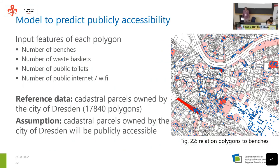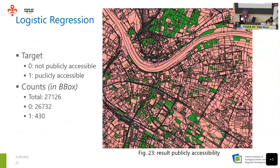For predicting public accessibility, I used a simple model counting POIs within polygons — benches, wastebaskets, public toilets, and internet access — using point-in-polygon analysis. As reference data I used the cadastral parcels owned by the city of Dresden, assuming those are publicly accessible. I ran logistic regression on 430 polygons in the bounding box. The results are good in some areas, though some areas still need improvement. I also tested other classifiers.